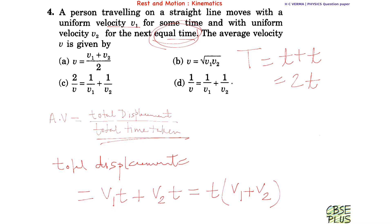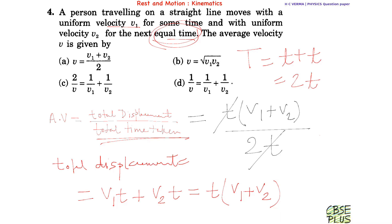Using the formula, average velocity equals total displacement divided by total time: that is t(v1 + v2) divided by 2t. The t cancels, and we get average velocity V equals (v1 + v2) / 2. This matches the very first option, so option A is the correct answer.